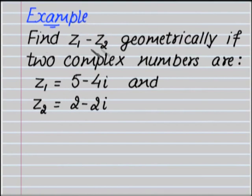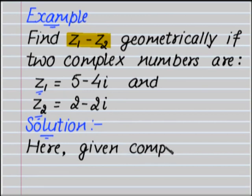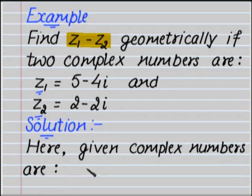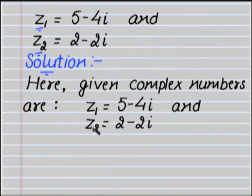Now let us see another example. Find z1 minus z2 geometrically if the two complex numbers are z1 equal to 5 minus 4i and z2 equal to 2 minus 2i. Solution: the given complex numbers are z1 equal to 5 minus 4i and z2 equal to 2 minus 2i. To find the difference z1 minus z2 geometrically, first we will represent the complex numbers z1 and z2 on the Argand plane.